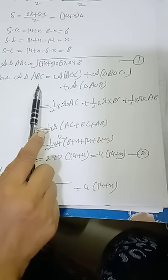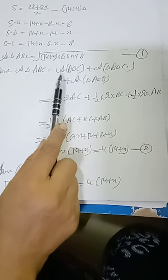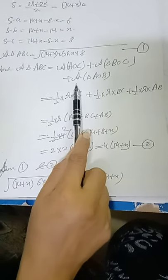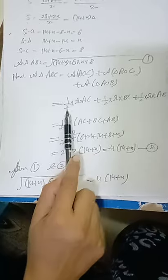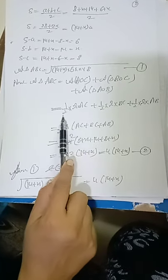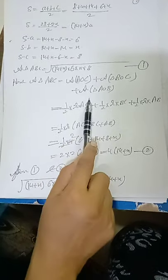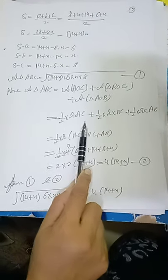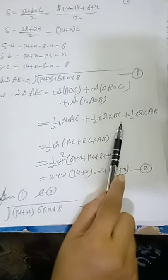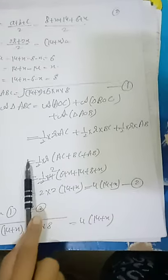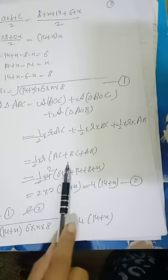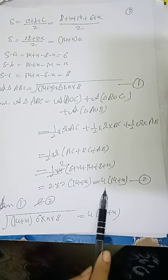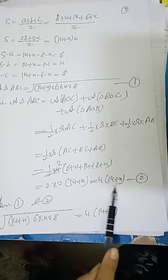We find area of triangle in another way. Area of triangle AOC plus area of triangle BOC plus area of triangle AOB. Height of each triangle is the radius. So half R into AC plus half R into BC plus half R into AB. Now we factor out half and R.